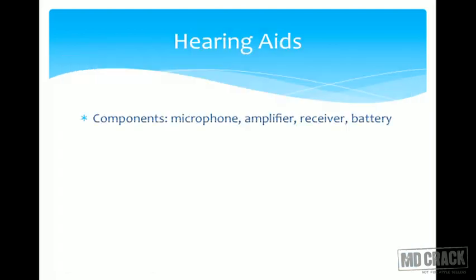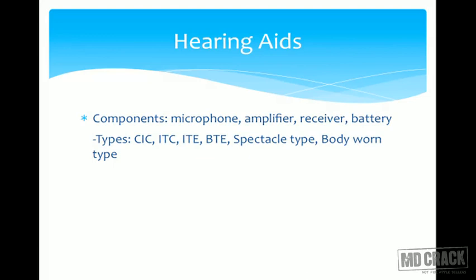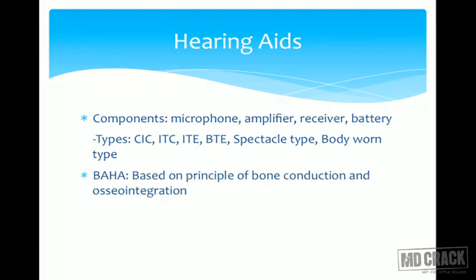Each hearing aid has four components: a microphone, an amplifier, a receiver, and a battery. Types of hearing aids include: CIC (completely in the canal), in the canal, in the ear, behind the ear, spectacle type, and body-worn type. The smaller ones are costlier.